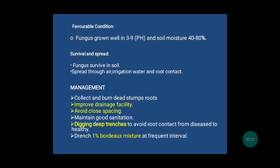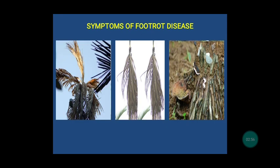The remedial measures are: collect and burn dead stem roots, improve drainage facility, avoid close spacing, maintain good sanitation. Dig deep trenches to avoid root contact from diseased plants to healthy plants, and also drench with 1% Bordeaux mixture at frequent intervals to avoid infection. The picture shows the symptoms of fruit rot disease. The first picture shows yellowing of leaves, the second shows drooping of leaves, and the last one shows brown discoloration.